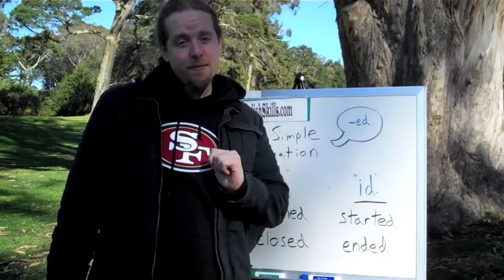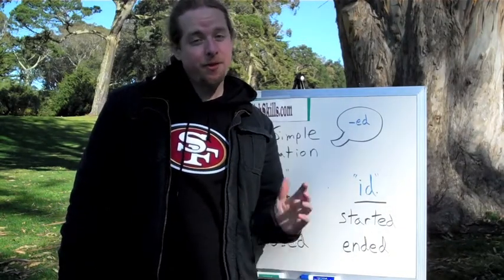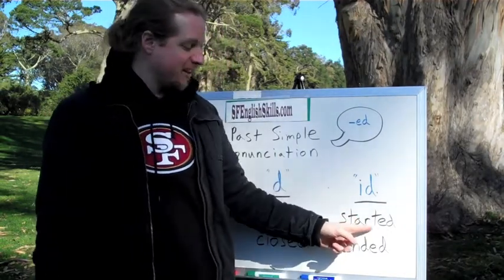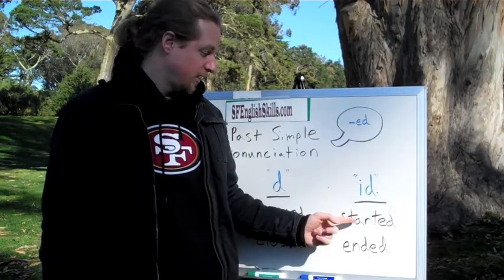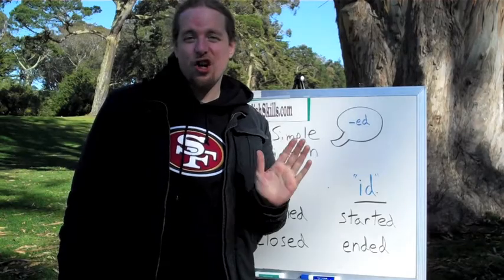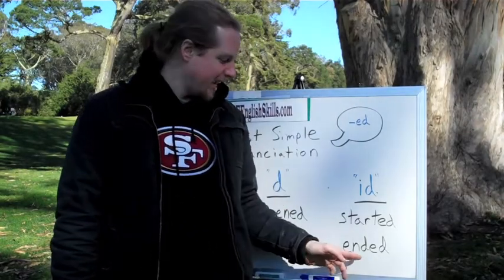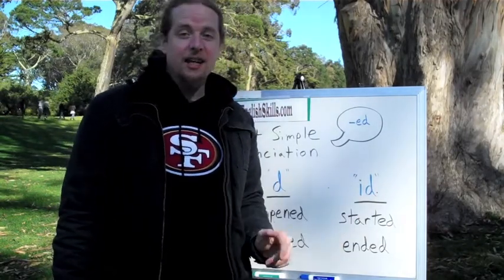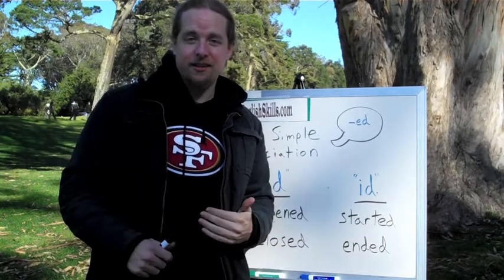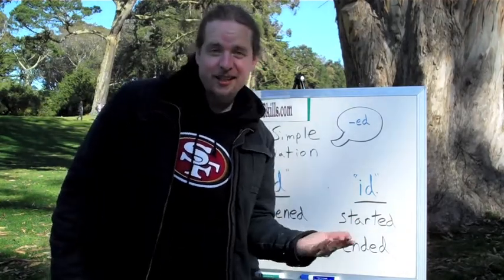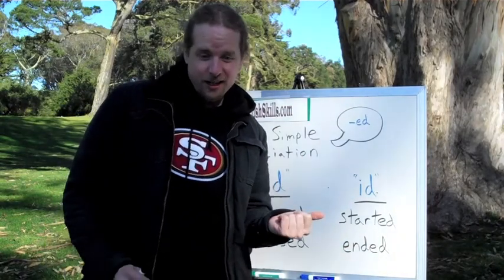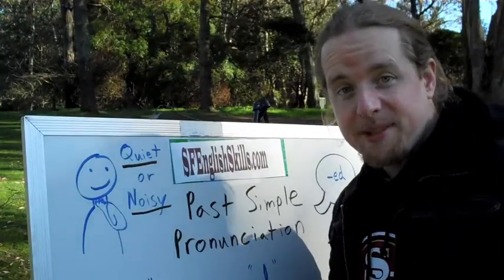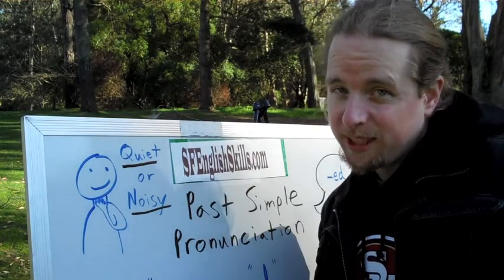So some verbs use a T sound, some verbs use a D sound. But what if the verb already has a T or a D? 'Start' — we can't say 'start-t.' No. We can't say 'end-t.' No. So we end up using a new sound — we use 'id' at the end. For example, 'started' or 'ended.' Started. Ended.